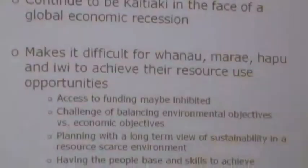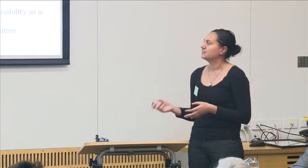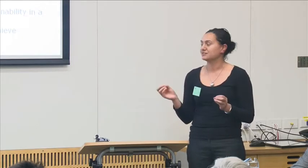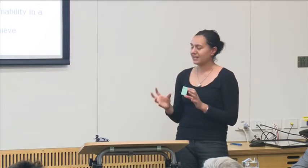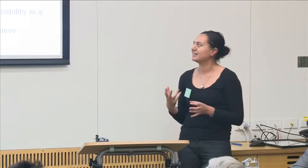Kai whakahaeretanga. Kaitiaki in the face of a global economic recession. This is a little bit different because what we're looking at is how do we enhance or create a sustainable use of the resource, not so much in just care, but also generating wealth. Access to funding may be inhibited. We might be looking at harder lending criteria from banks for capital venture projects. Challenging of balancing environmental objectives versus the economic objectives. How do we make good decisions economically but still achieve what we want environmentally and sustainable use? We plan with a long term view of sustainability as Māori in perpetuity, whether we have a resource scarce environment or we have loaded resources. How do we continue to plan to do that? And again, people base and skills. Do we have those on the land?